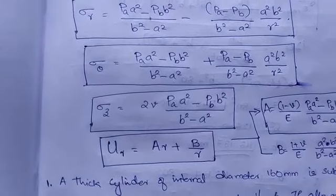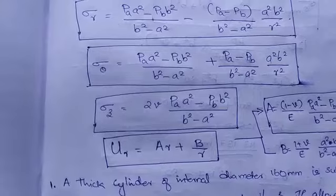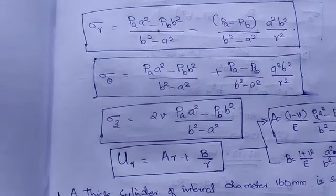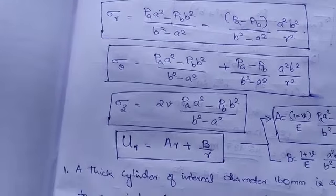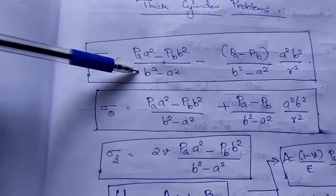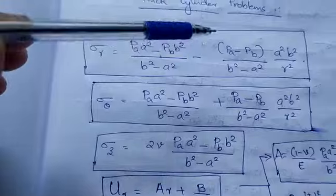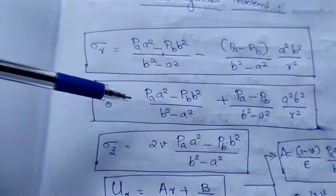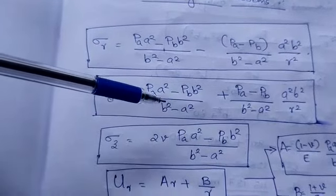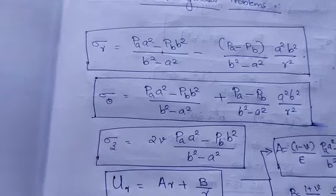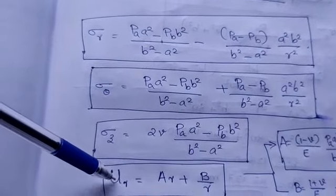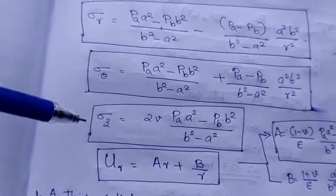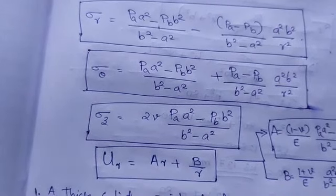We will mainly be dealing with hollow cylinders, where p_a is the internal pressure and p_b is the external pressure. b is the external radius and a is the internal radius. sigma_theta is the tangential stress. sigma_z is the stress along the z direction. nu is Poisson's ratio and E is Young's modulus.